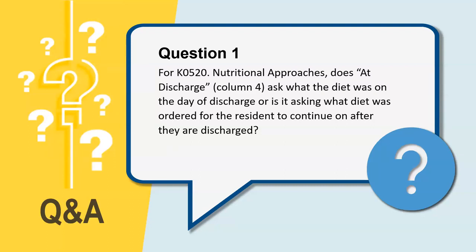Thank you, Brenda — we have two questions for you. The first is: for K0520 Nutritional Approaches, does at discharge Column 4 ask what the diet was on the day of discharge, or is it asking what diet was ordered for the resident to continue on after they are discharged? That's a great question. At discharge, providers have to check all nutritional approaches listed that were performed within the last three days of the SNF PPS stay that ends on A2400C, which is the end date for the most recent Medicare stay. Therefore, this column is not meant to collect data for nutritional approaches that may occur after discharge, but really within those last three days of the SNF stay.